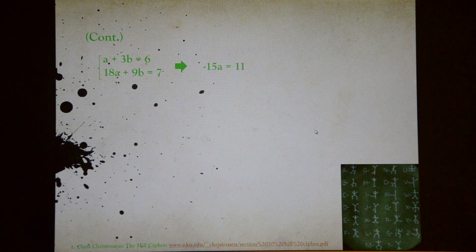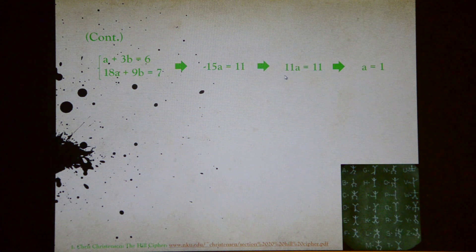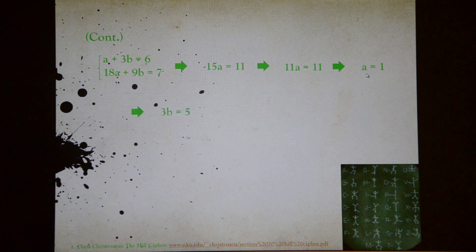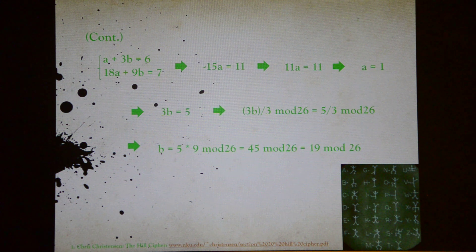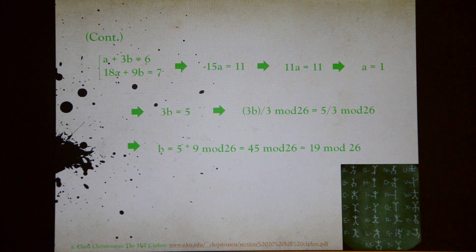Now we can solve for A and B first using these two equations. Since in modular 26, negative 15 is the same thing as 11 mod 26, we get this equation. After we solve it, we get A equals 1. Substituting A equals 1 back into the first equation, we get 3B equals 5. To get B, we divide both sides by 3 mod 26, which is the same thing as multiplying by the multiplicative inverse of 3, which is 9 mod 26, according to the previous chart. Thus, we get that B is 19. Now we have the values for A and B.